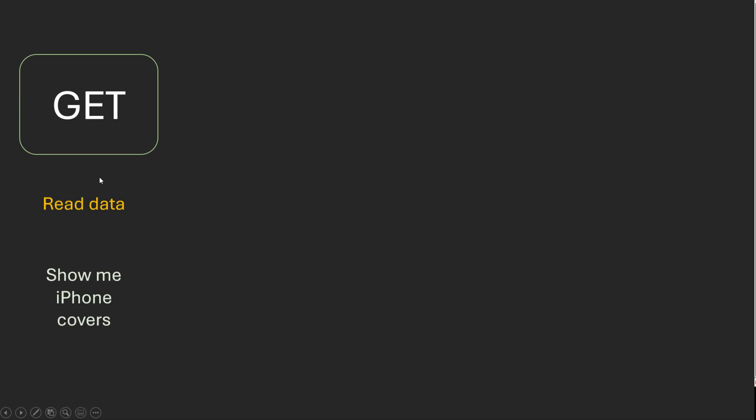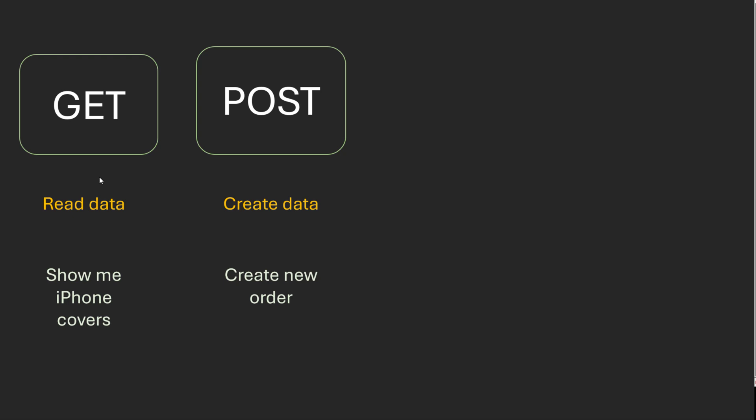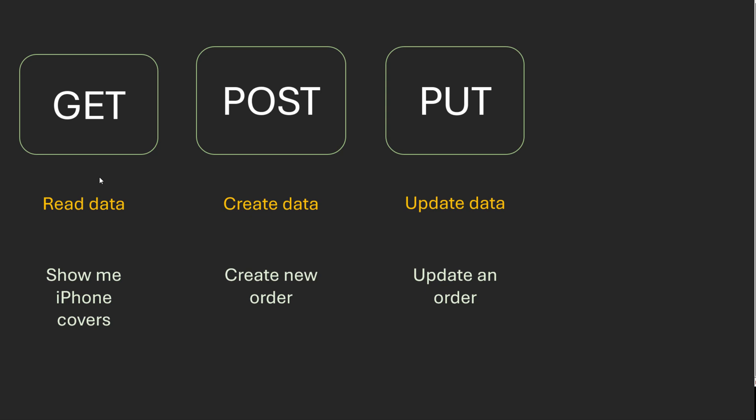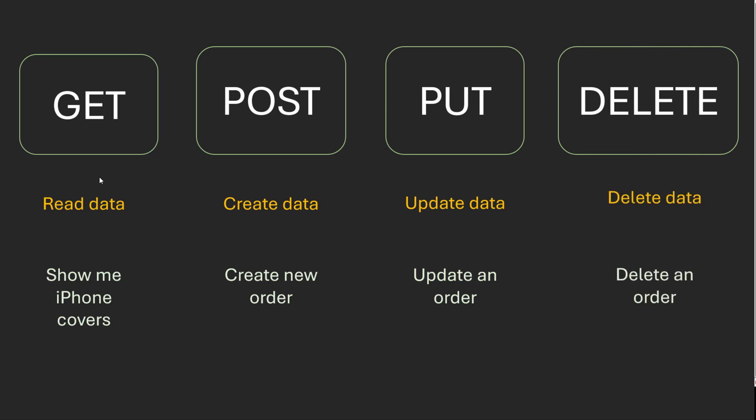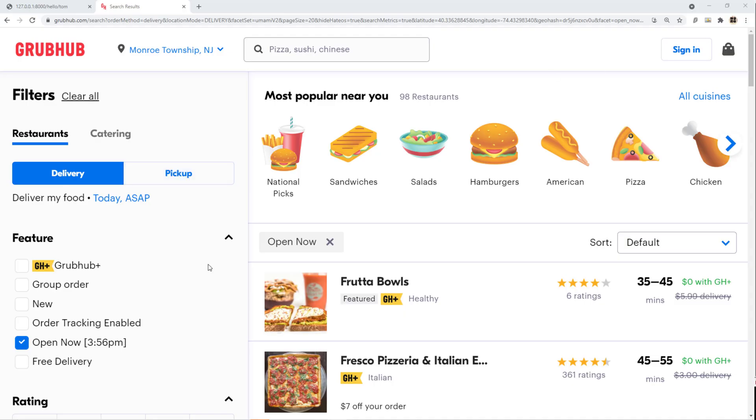We've been using the GET method. In the HTTP REST protocol there are several other methods. GET is usually used to retrieve data — for example, searching for an iPhone case on Amazon makes a GET request. POST is used to create data, so placing an order on Amazon issues a POST request. PUT is used to update data, like updating an existing order. DELETE is used to delete data, like deleting an order. These four — GET, POST, PUT, DELETE — are the most popular ones.